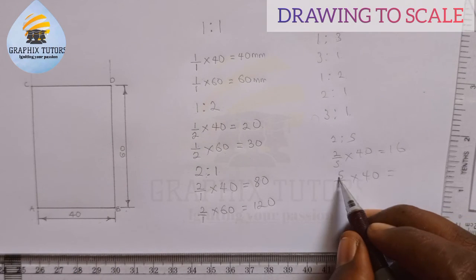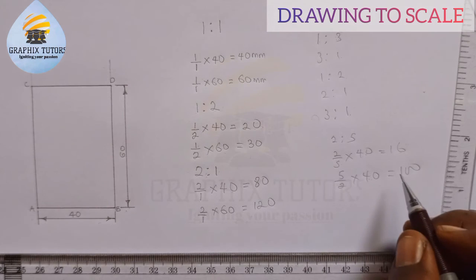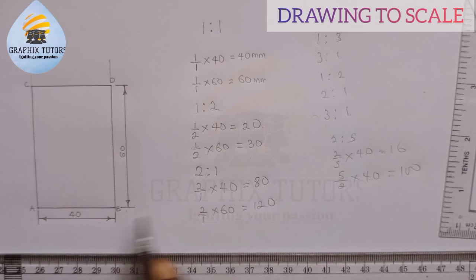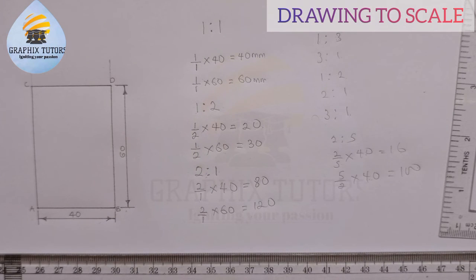Two into 40, two into 40 is 20. 20 times 5 is 100. So it means that AB here will be 100. Are we together now? So this is what we call half full size and twice the size.